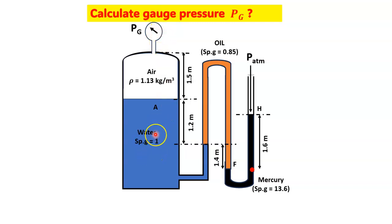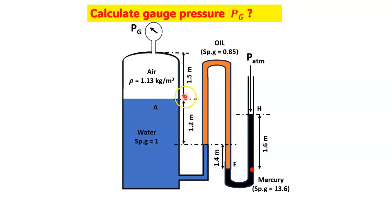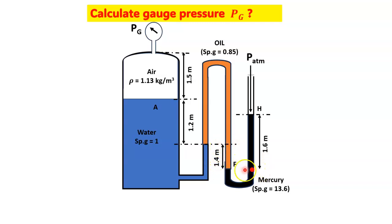Air is present in the tank and water is at the bottom. Air density is 1.13 kg/m³. Water specific gravity is 1. The height from the water surface to the top of the tank is 1.5 meters. The distance from one reference point to another is 1.4 meters, and from the next point is 1.6 meters.